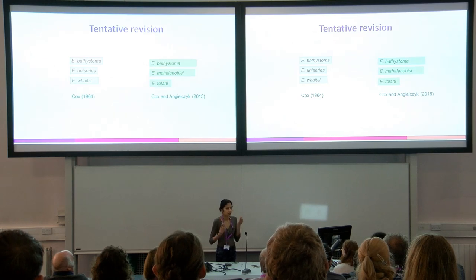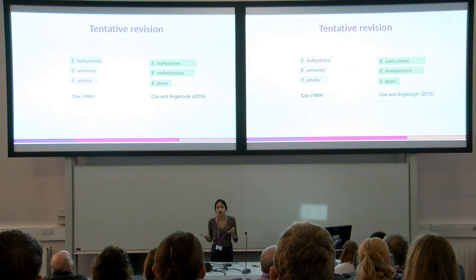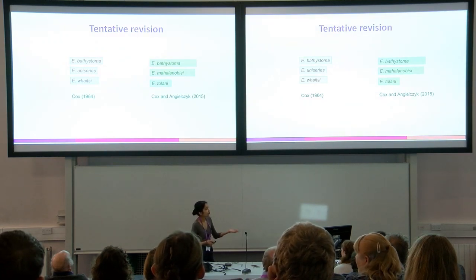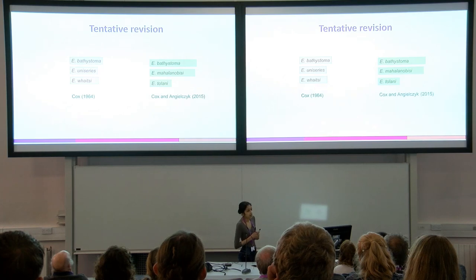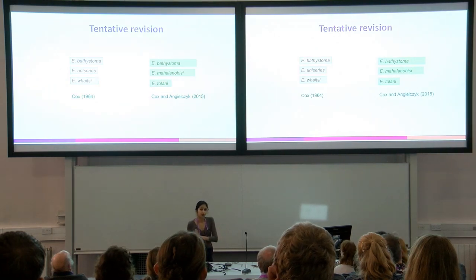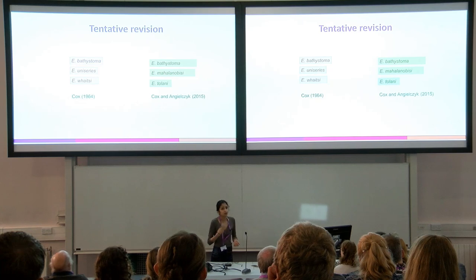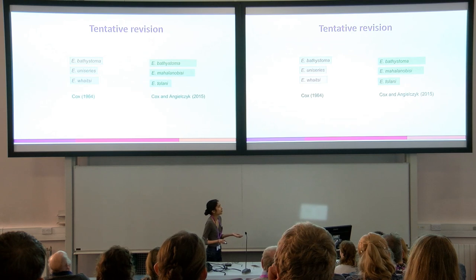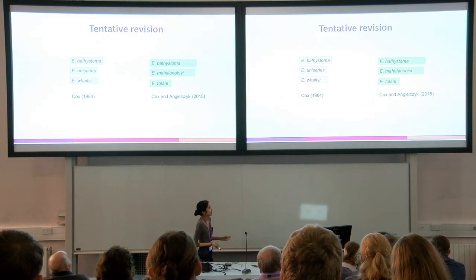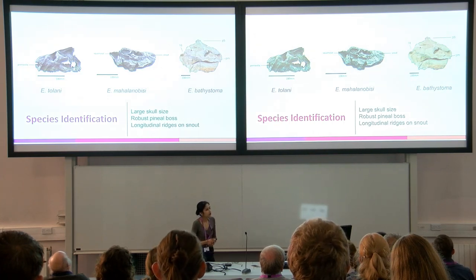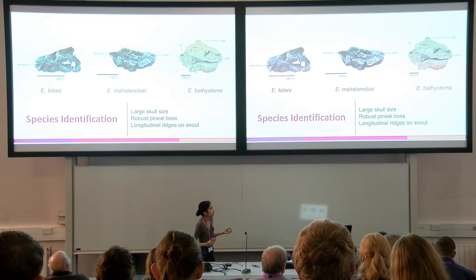The most recent revision of the taxonomy of Endothiodon is still tentative, but Cox and Angelczyk in 2015 suggest that the only three species are Endothiodon bathystoma, Endothiodon mahalanobisi, and Endothiodon tuhlanyi. Endothiodon mahalanobisi is a skull described from India that is much smaller and is believed to be a distinct species. Endothiodon tuhlanyi is probably the most unusual because it has the presence of very small tusks, unknown in any other Endothiodon species.